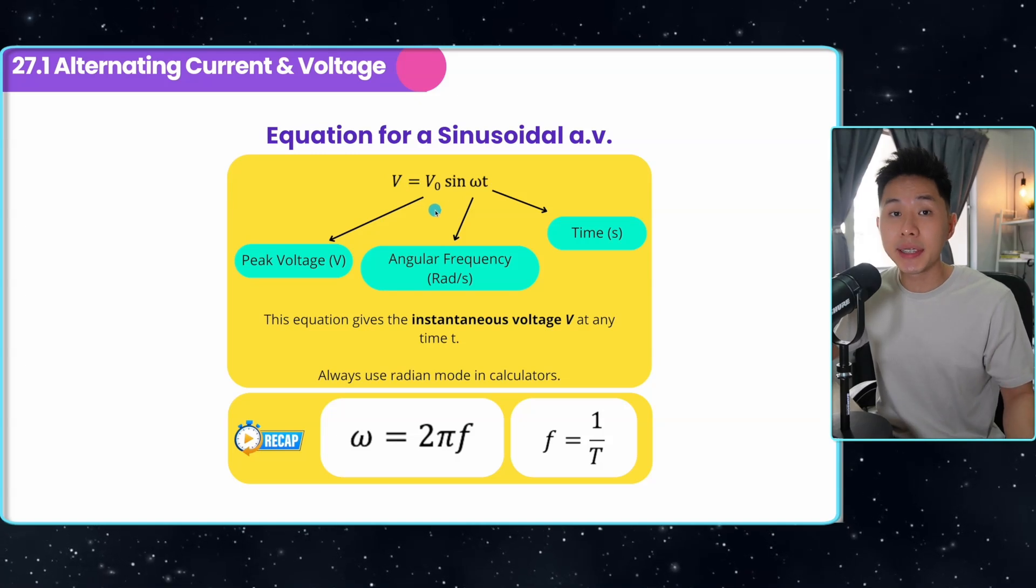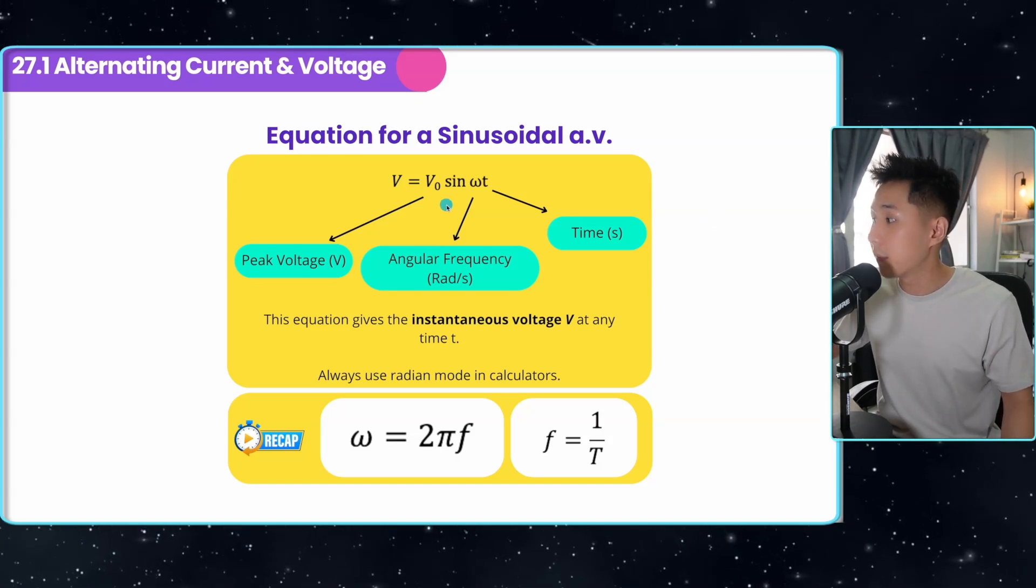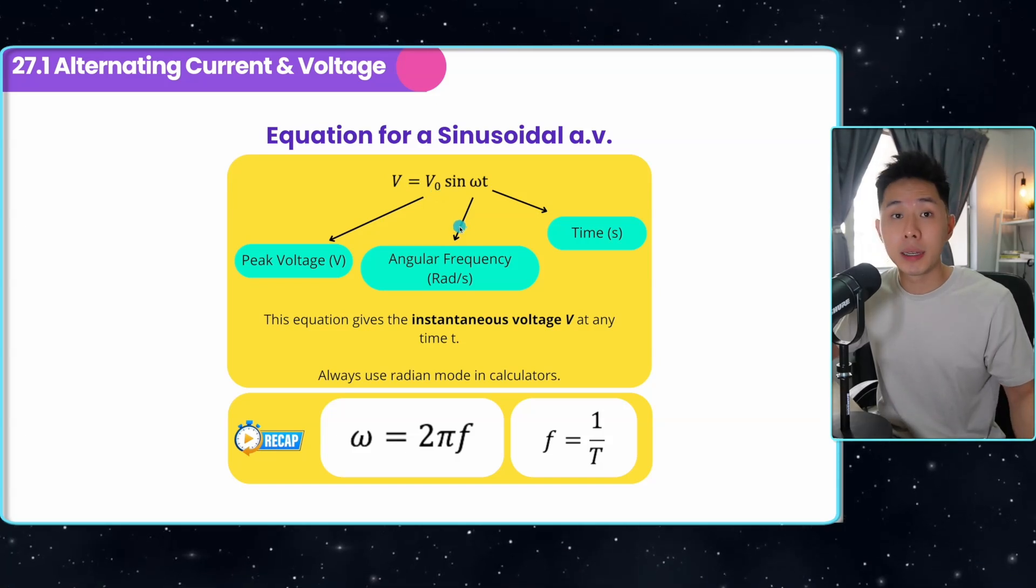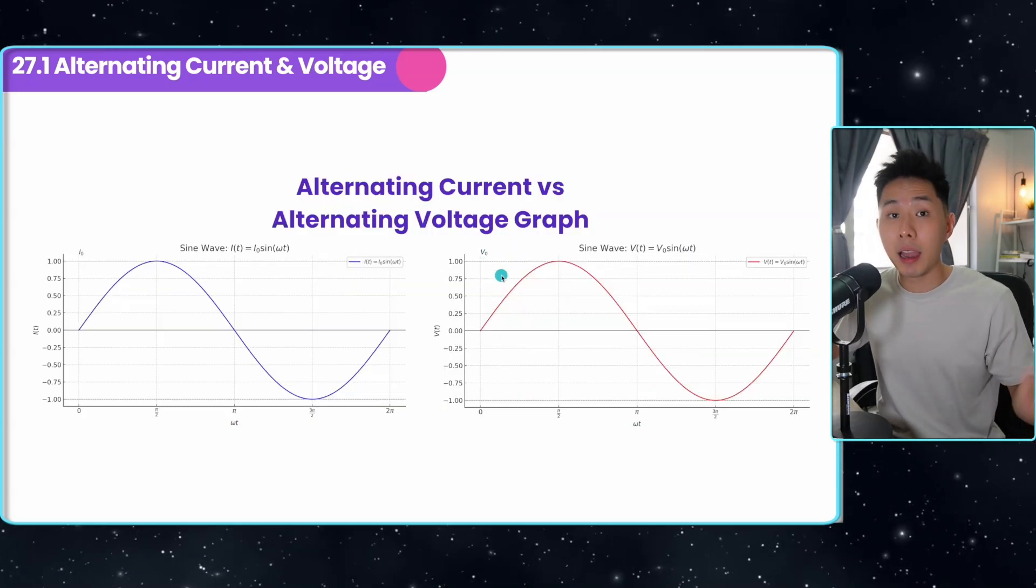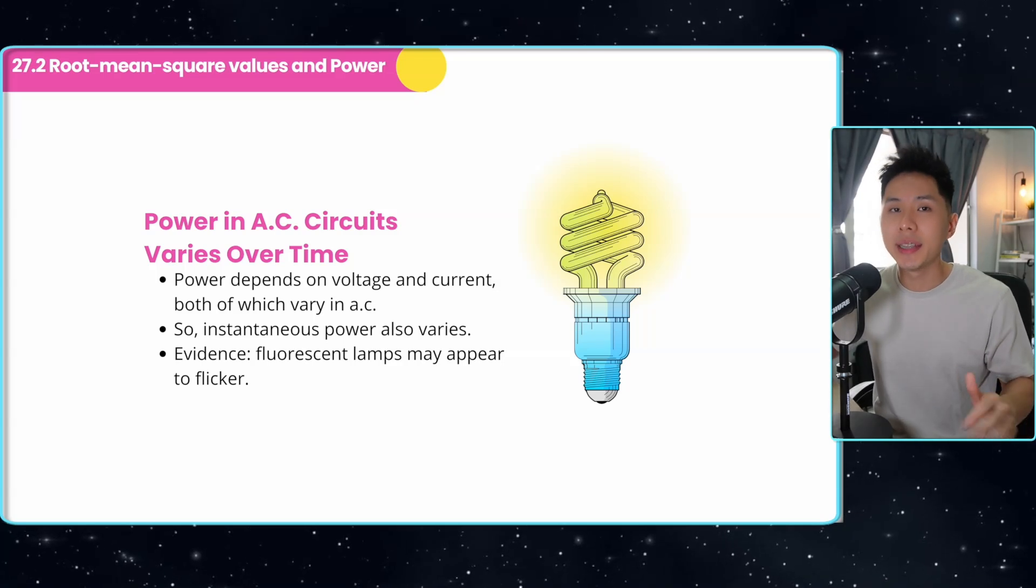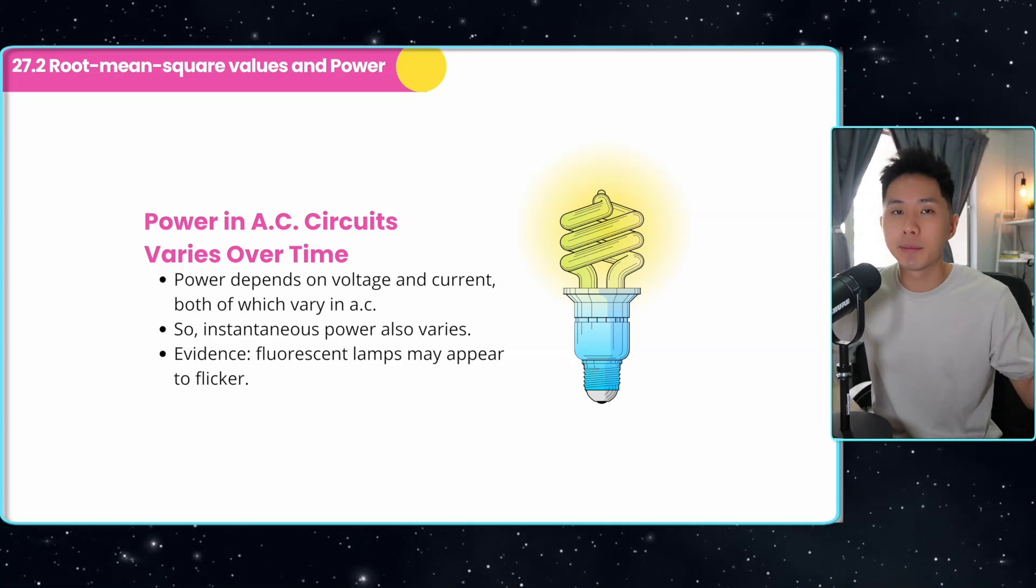We can calculate instantaneous voltage by using this formula. Everything is the same except for now, the amplitude will be the peak voltage. So these are the alternating current and alternating voltage graphs. Now we have looked into what instantaneous current and instantaneous voltage are.